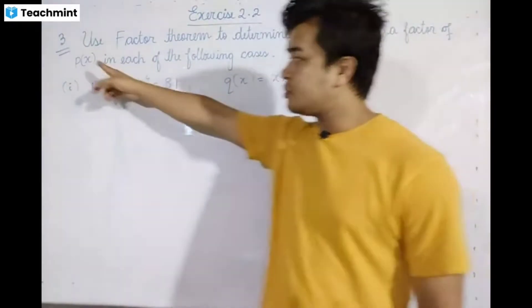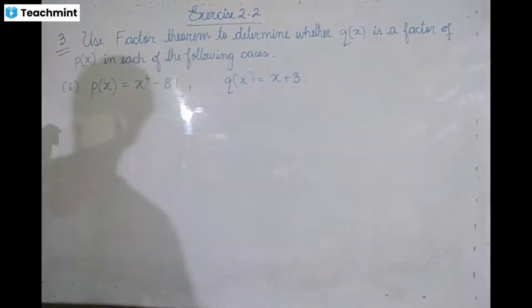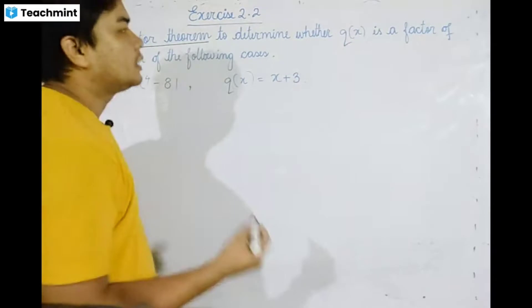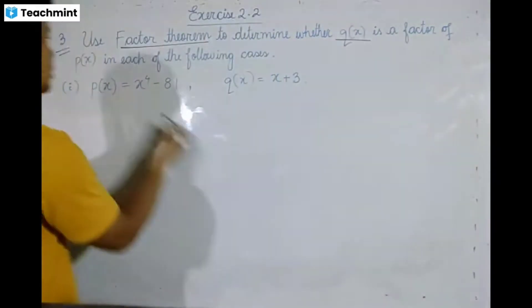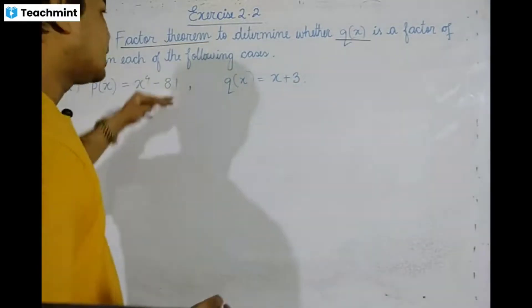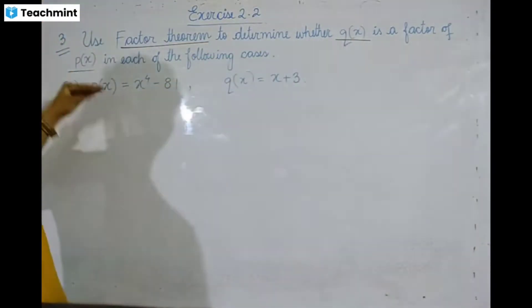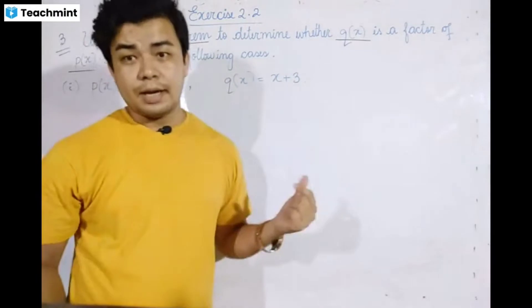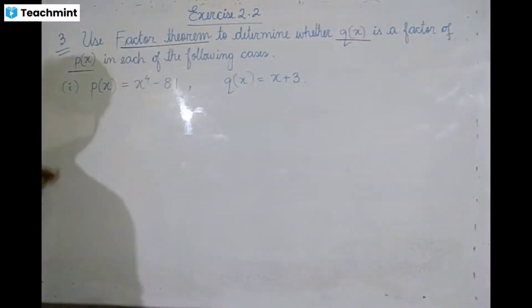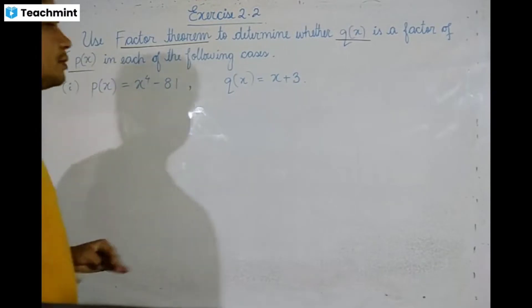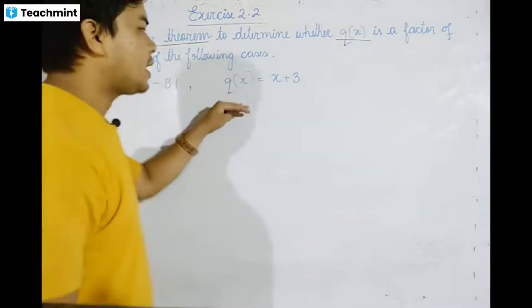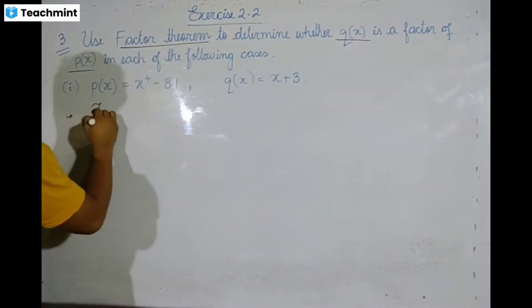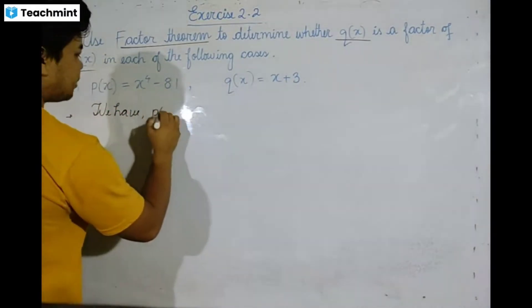Exercise 2.2: is Q of x a factor of P of x? By the factor theorem, Q of x is a factor of P of x. Here P of x is x to the power 4 minus 81, and Q of x is x plus 3.